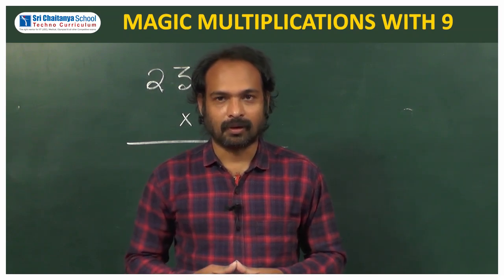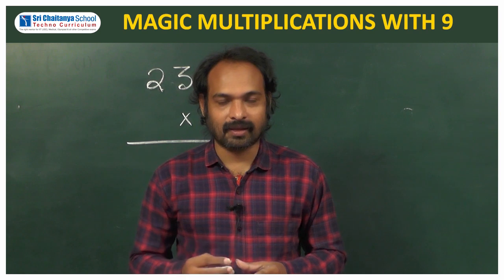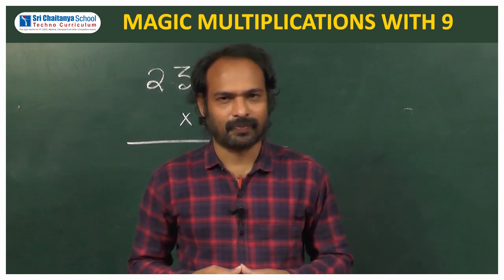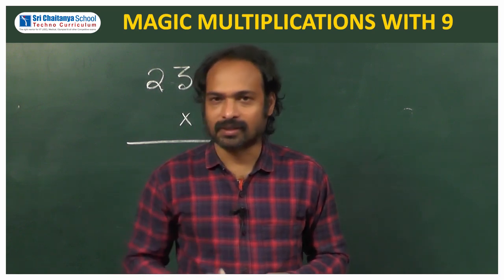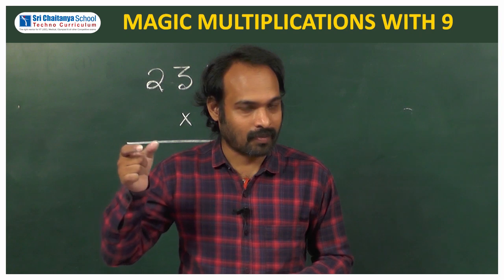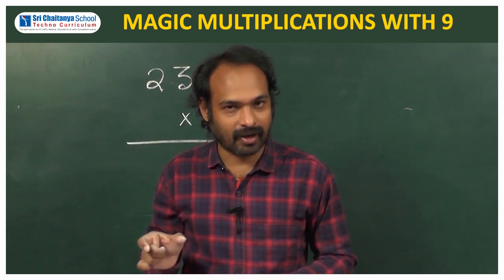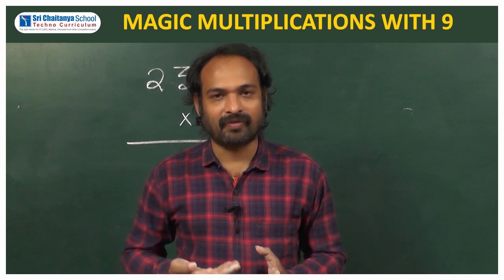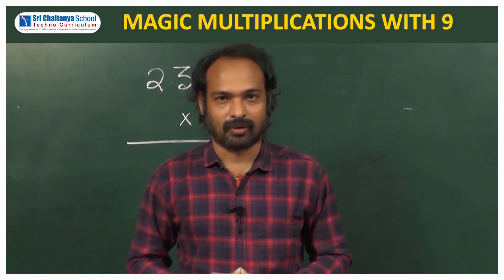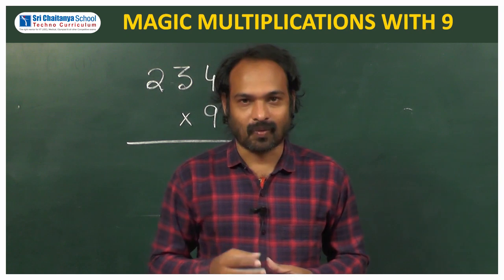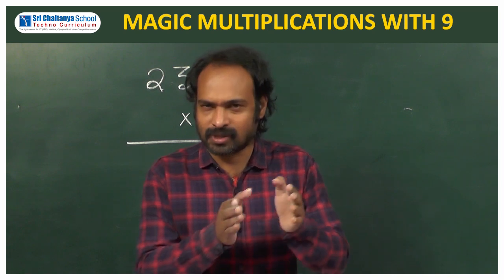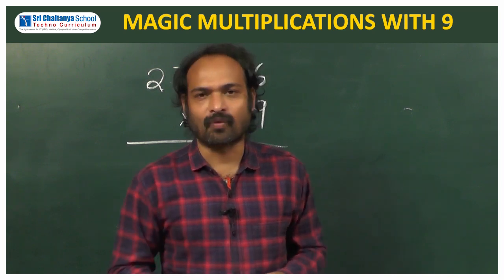Hi students. Now we are going to discuss another interesting model with multiplication of 9s. We already discussed when the number of digits and number of 9s are the same. Second model: when number of digits are less than number of 9s. Now, what if number of digits are more than number of 9s? Today we are going to discuss that method — when number of digits are more than number of 9s. More or less the process is same, but small changes are involved in this method.